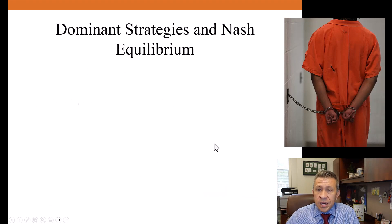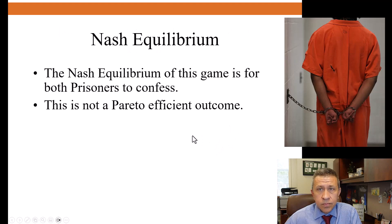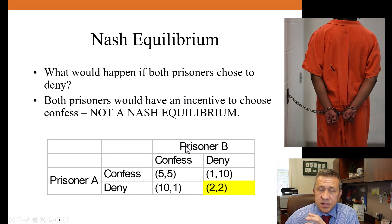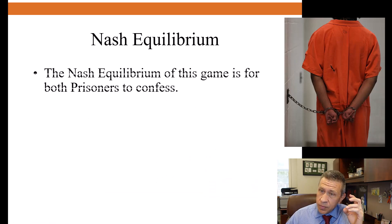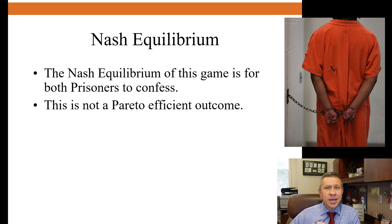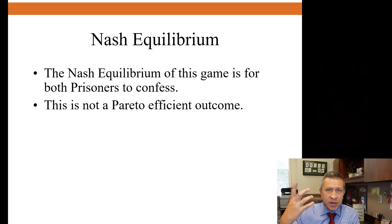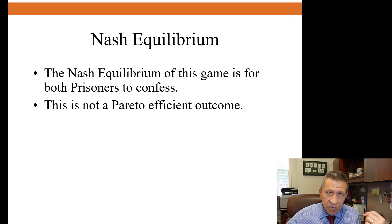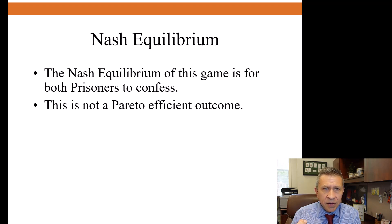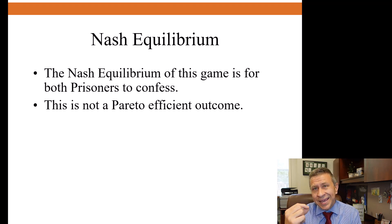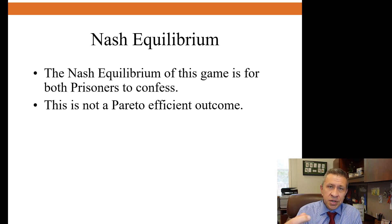The only Nash Equilibrium of this game is for both players to confess, with a payoff of five years in prison for each of them. But this is not what we would call a Pareto efficient outcome. There is another outcome available where both players are better off. The prisoner's dilemma puts you in a situation where the equilibrium outcome leads to payoffs that are worse than some other outcome, and it's worse for both players — yet they each have this individual incentive to confess to try to get the lower sentence for themselves.